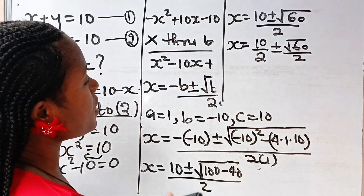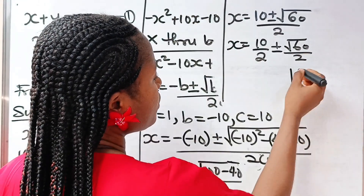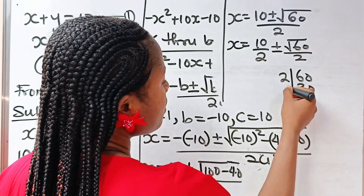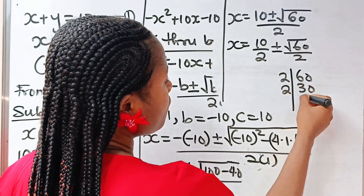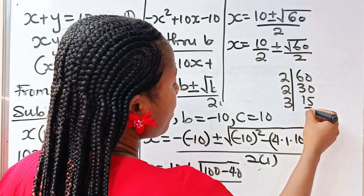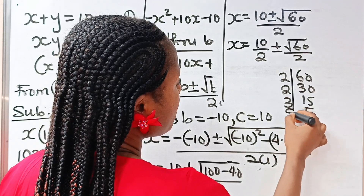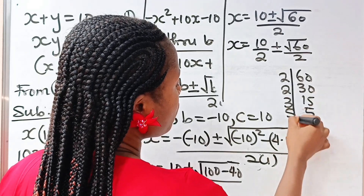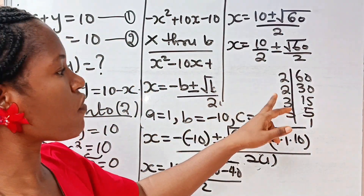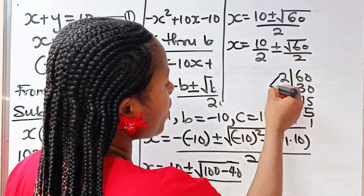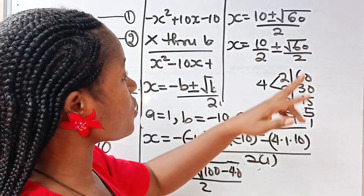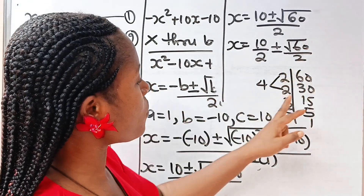Now root 60 — let's find its factors. 60 divided by 2 is 30, divided by 2 is 15, divided by 3 is 5, and 5 divided by 5 is 1. So if we pick a perfect square from here, it's going to be 2 and itself — 2 times 2 gives us 4.